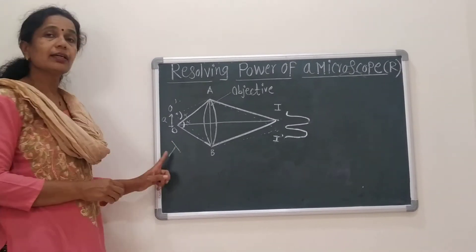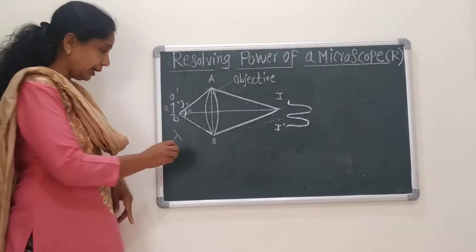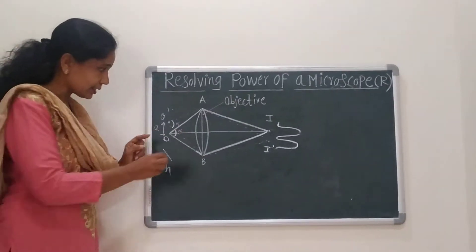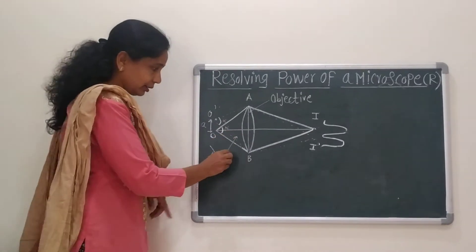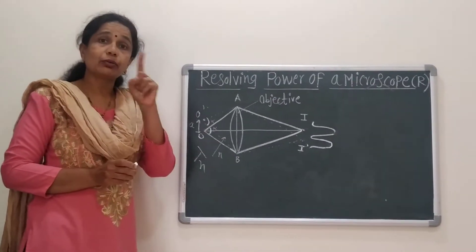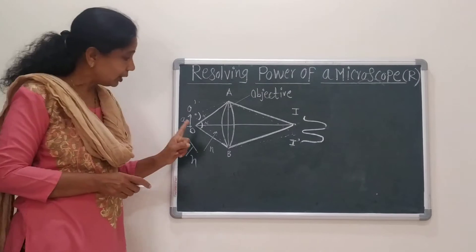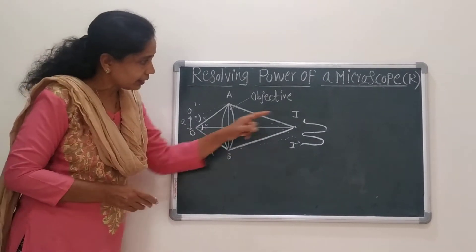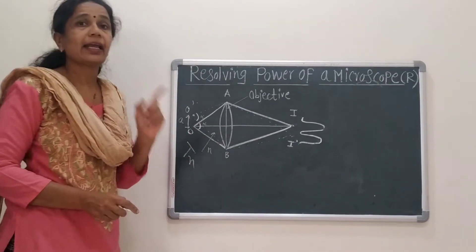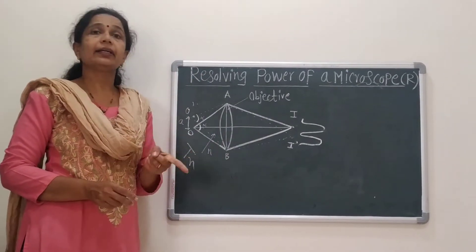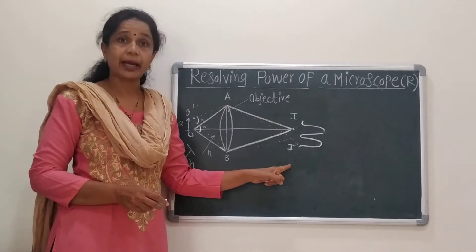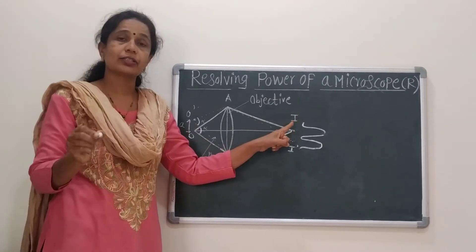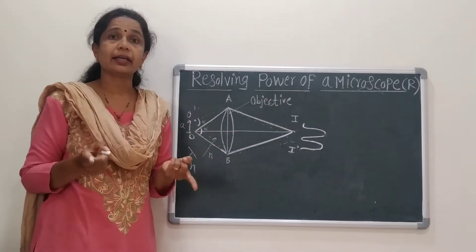Lambda is the wavelength of light in air. Lambda-N is the wavelength of light in the medium between the object and the objective, where N is the refractive index of that medium. I and I' represent the central maxima of the diffraction pattern. The diffraction pattern consists of Airy rings and discs.